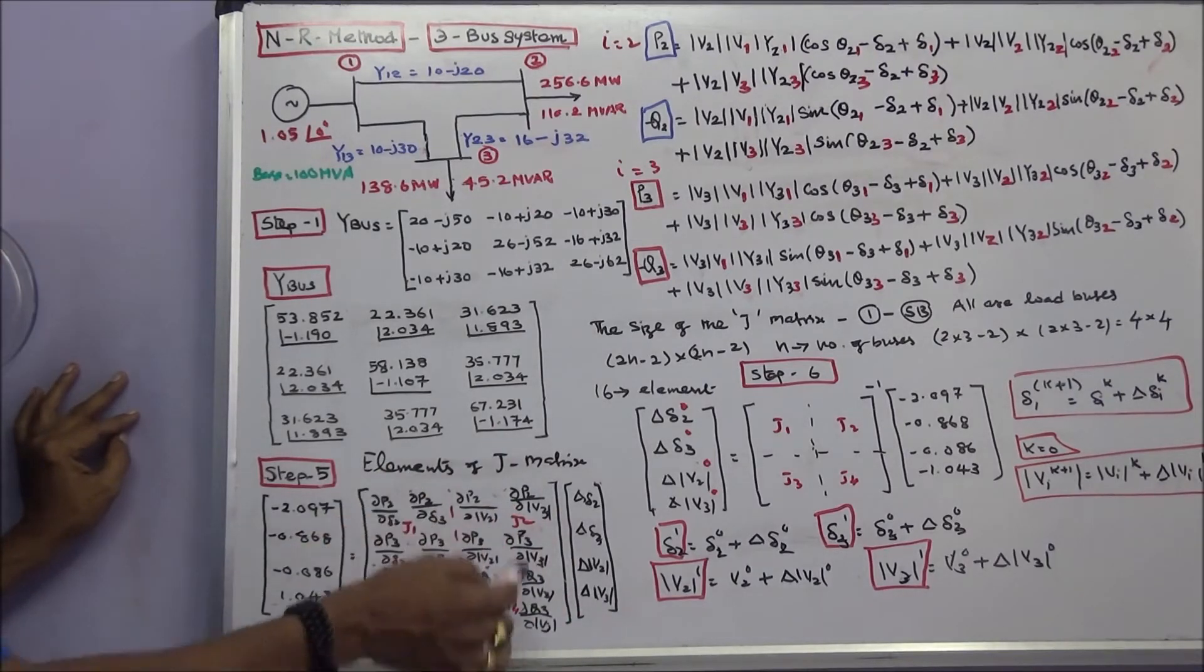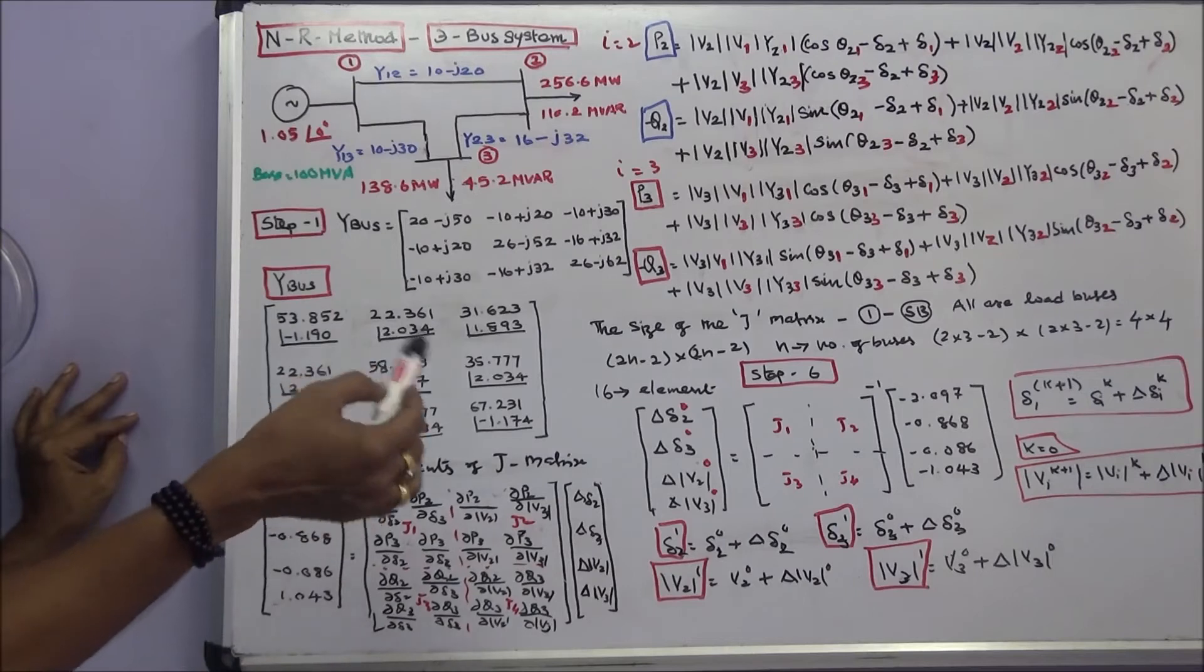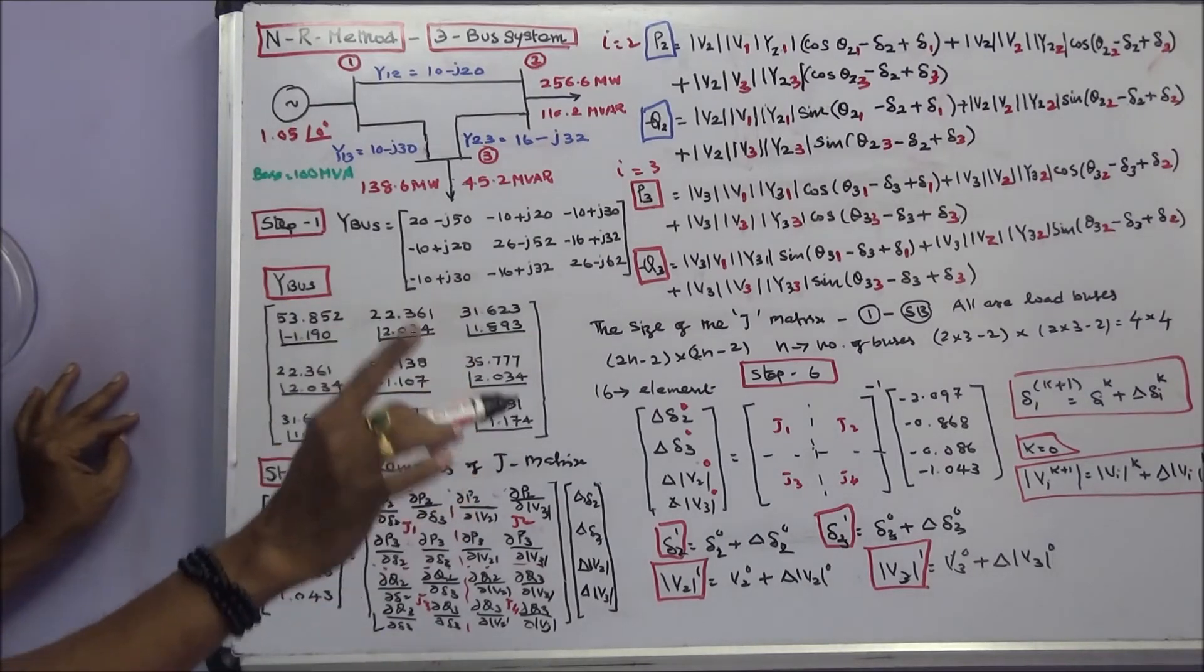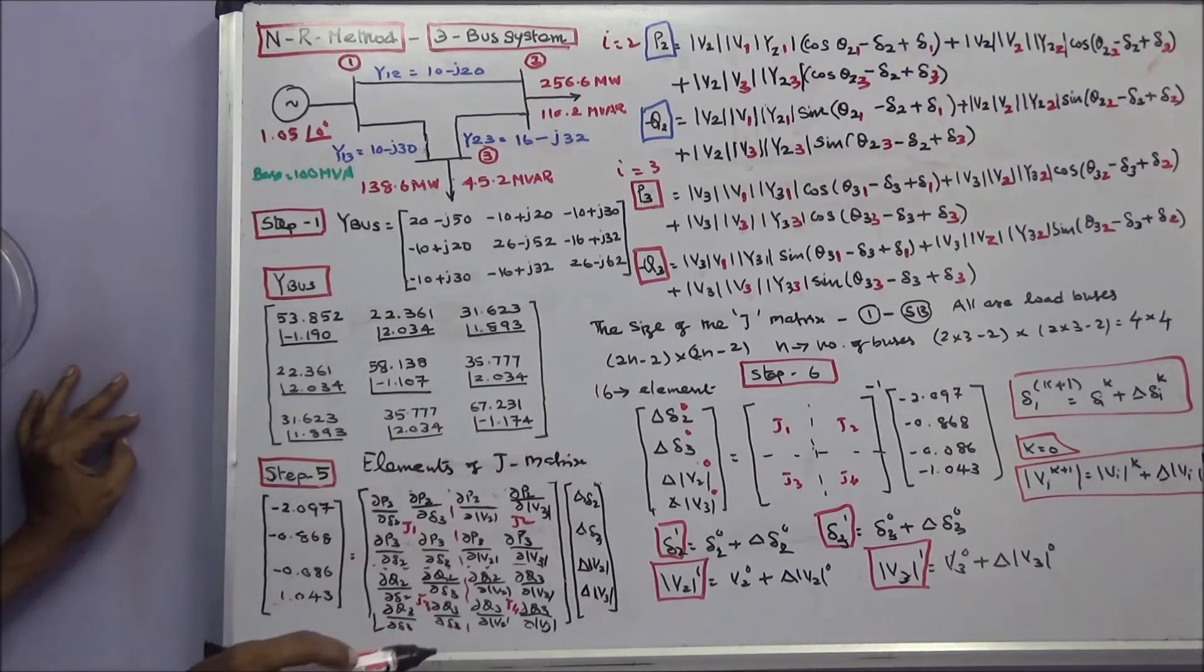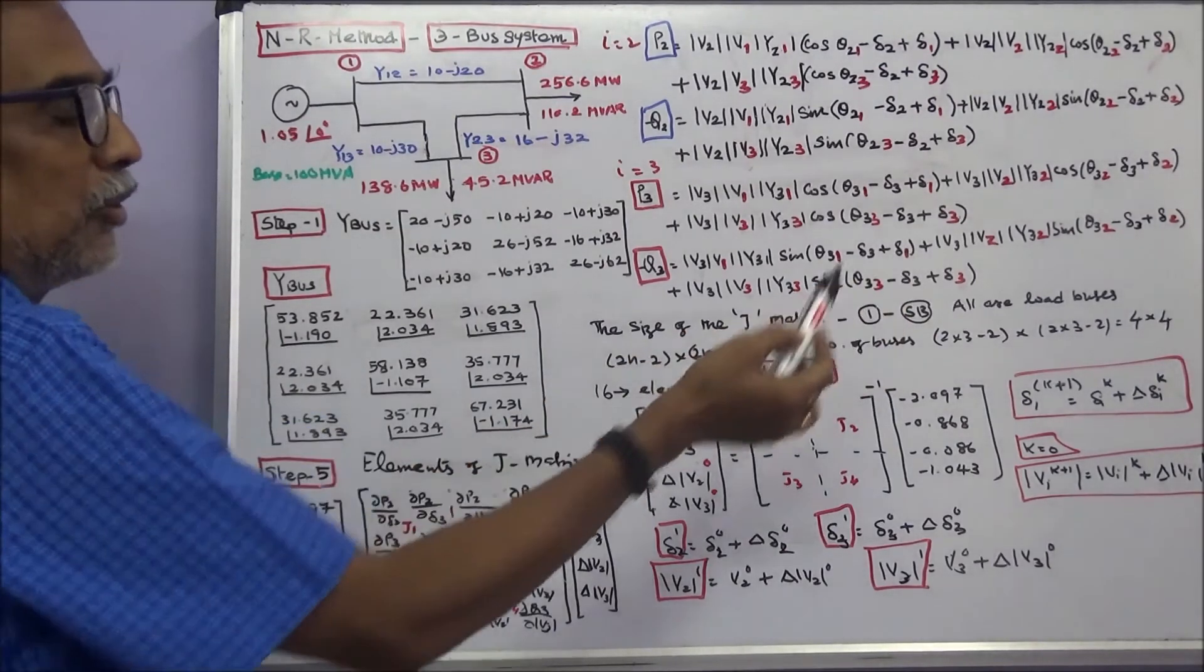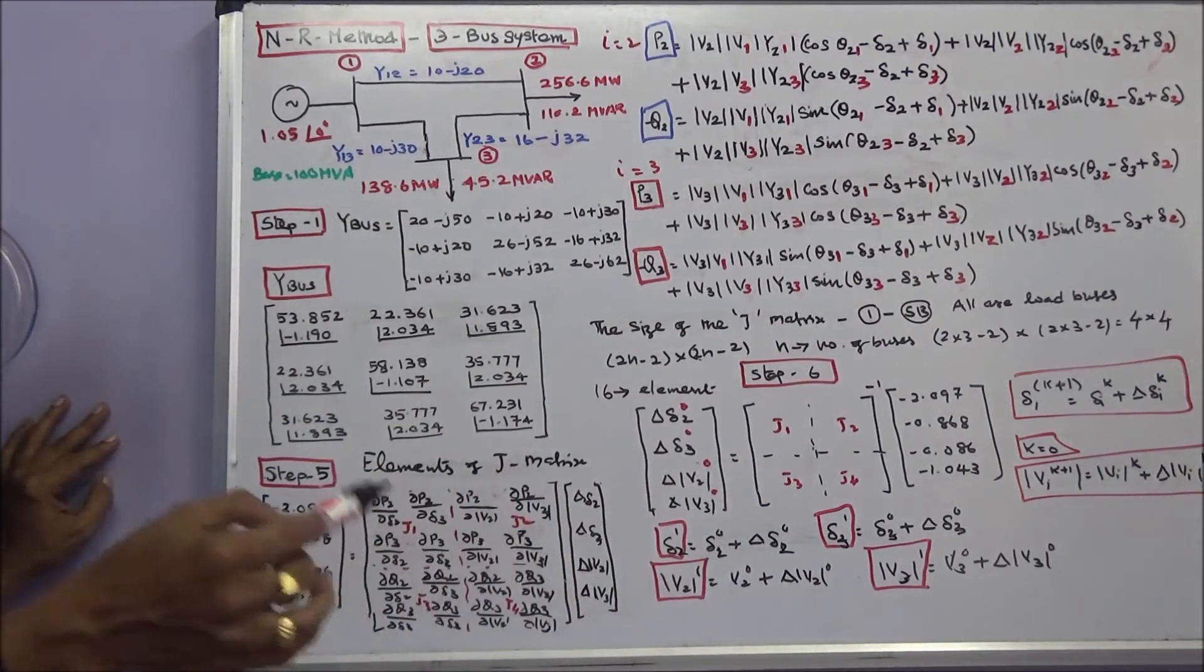The size of the Jacobian matrix is 2N minus 2 by 2N minus 2. If a system consists of only one generator bus, remaining buses are load buses, this is the formula. Number of buses are 3, therefore 2 into 3 minus 2, 4 by 4 matrix. That is the size of the Jacobian matrix.